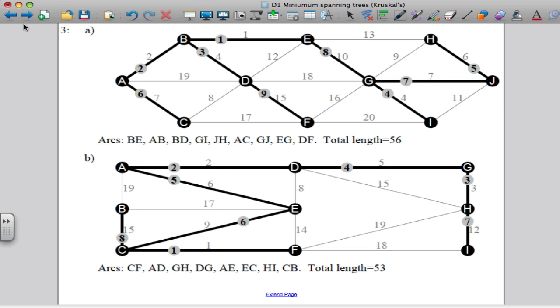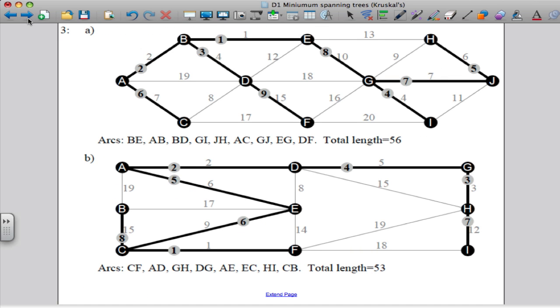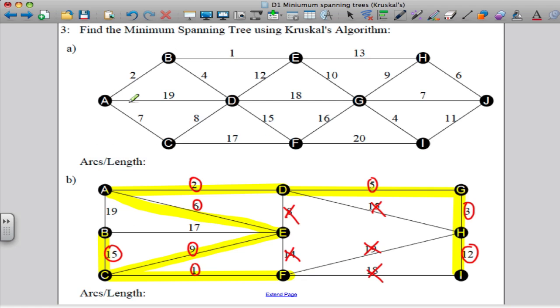So hopefully this explains to you how to get this answer here. Just looking, see if I got the same as a computer. Indeed, I did. The total length of that minimal one there is actually 53. And the arcs are CF, AD, GH, DG, AE, EC, HI, and CB. So that is how you would have got the answer to that one. Thank you for listening.